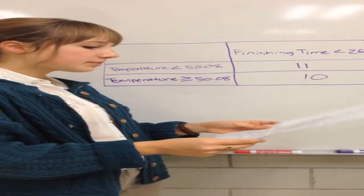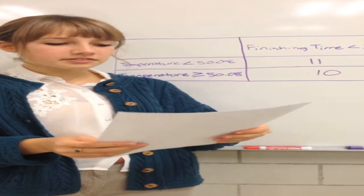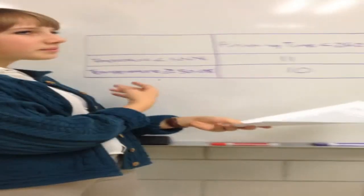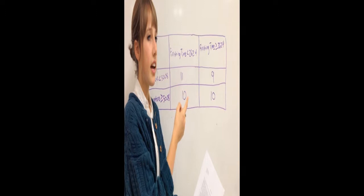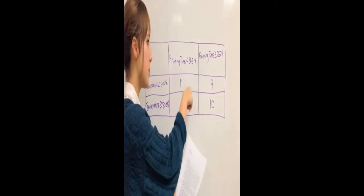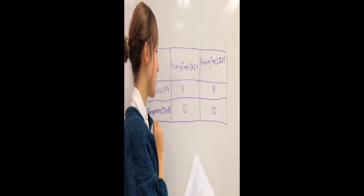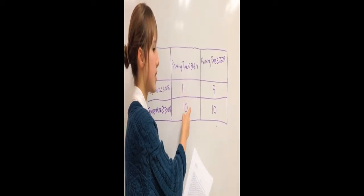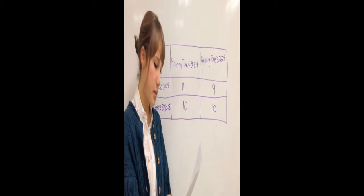For my data, I was measuring the relationship between average temperature during a marathon and average finishing time. So on my data chart, I found the mean of the average finishing time, and then I put that into categories, and then I tallied up all of my points. The numbers that you see in the boxes is the frequency of the observed values.